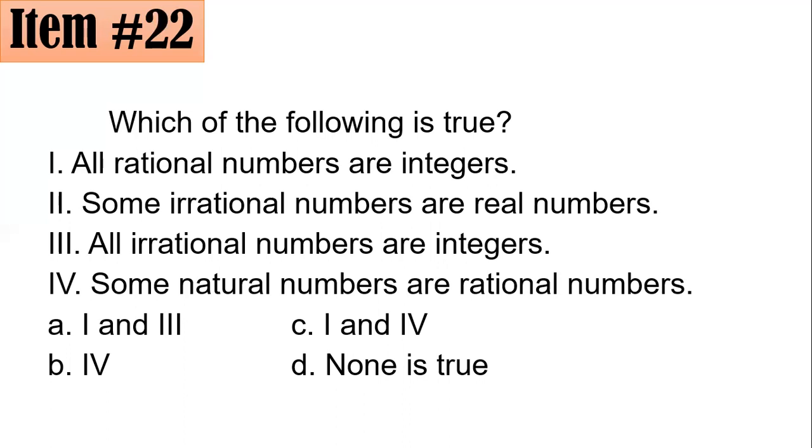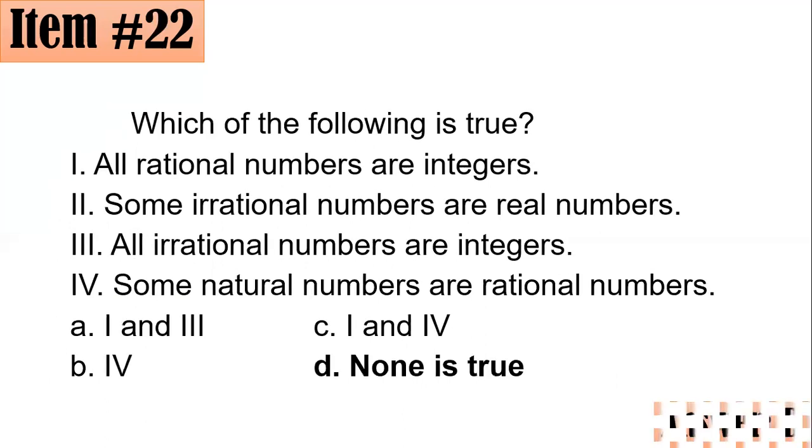So three is false. There's no commonalities in them. And for four, some natural numbers are rational numbers - this is false. In fact it should be all natural numbers. So none of these statements is true. Hence the correct answer is letter D. I hope you got it.